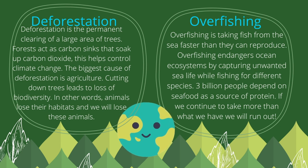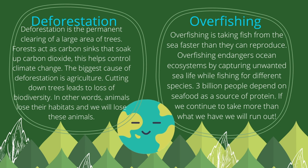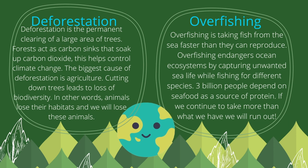Overfishing is taking fish from the sea faster than they can reproduce. Overfishing endangers ocean ecosystems by capturing unwanted sea life while fishing for different species. Three billion people depend on seafood as a source of protein, but if we continue to take more than what we have, then we will eventually run out of fish.